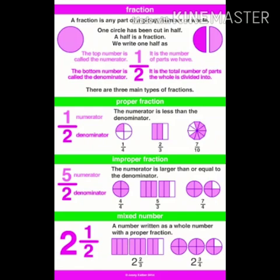There are three main types of fractions. The first type is a proper fraction, where the numerator is less than the denominator. For example, 1 by 2, where 1 is the numerator and 2 is the denominator. Another example is 1 by 4, where 1 is the numerator and 4 is the denominator, and the numerator is less than the denominator.